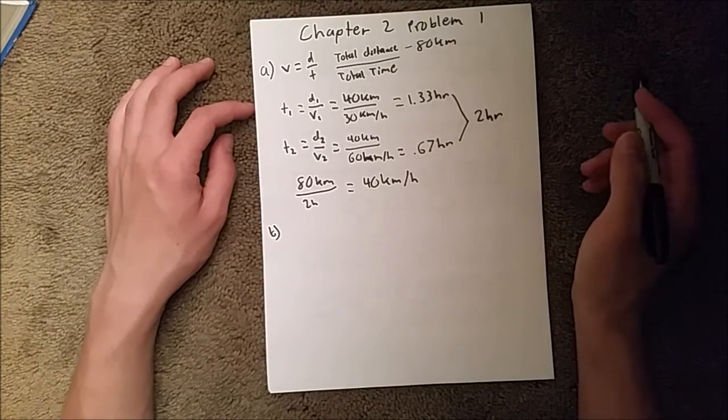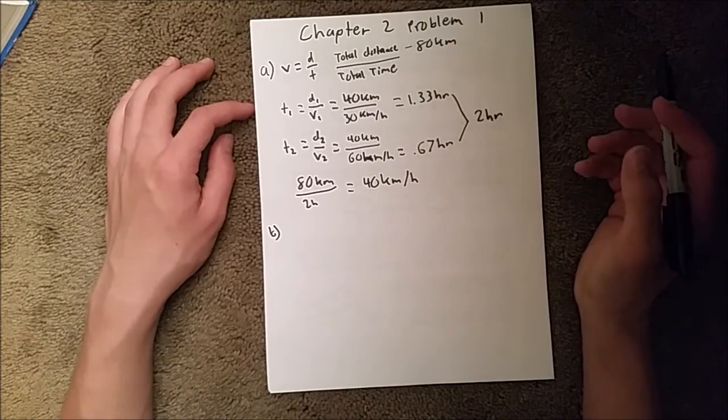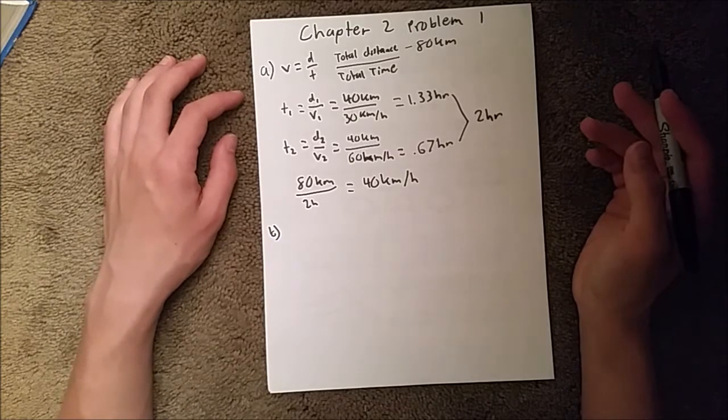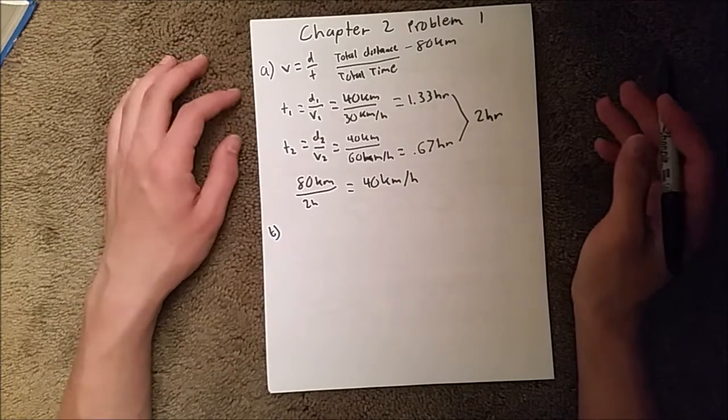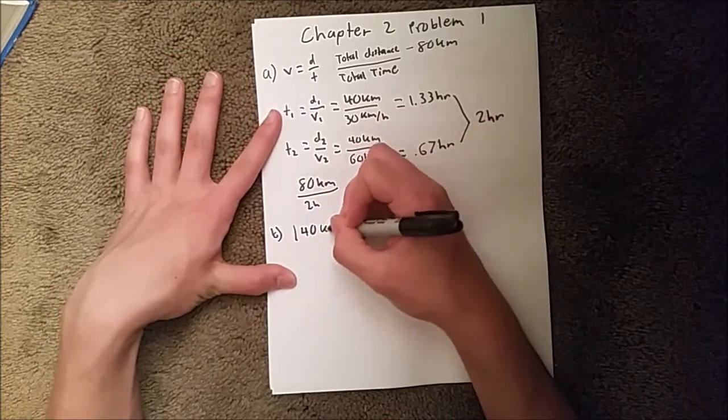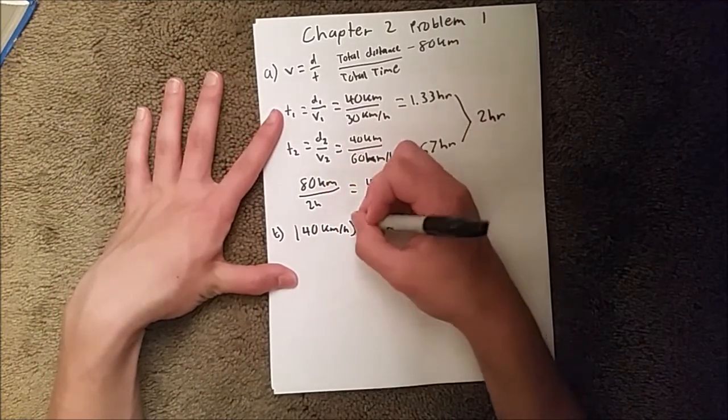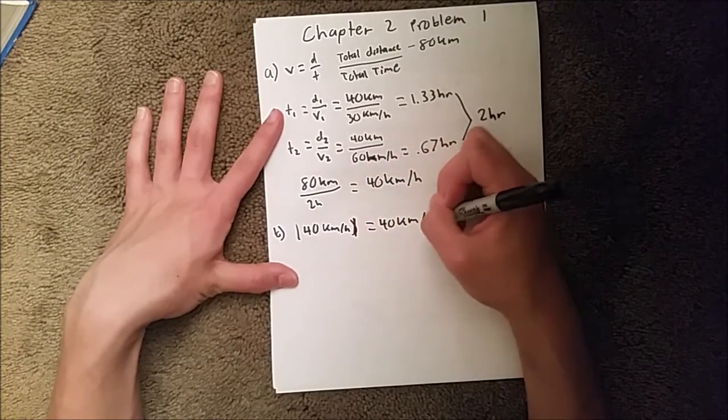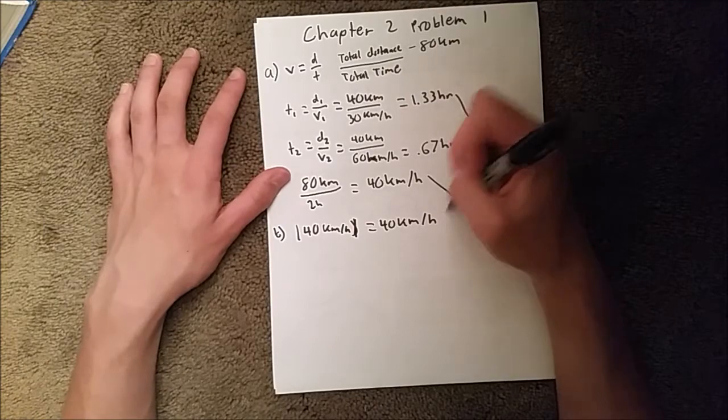So, it's just basically the positive version of your velocity. So, if your velocity is negative 20, then your speed is going to be just 20, positive 20. So, we're going to do the absolute value of 40 kilometers per hour, and that is 40 kilometers an hour. So, these two are the same answer.